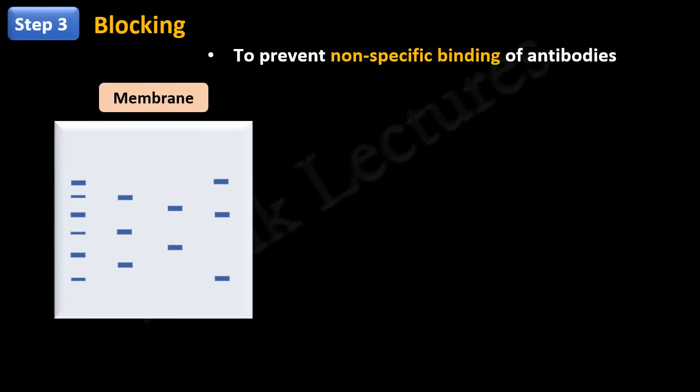Most common blocking agents used are bovine serum albumin and non-fat milk. These blocking agents will fill all the unoccupied sites on the membrane. Since these blocking agents specifically bind the membrane, they will not disturb the already bound proteins on the membrane.